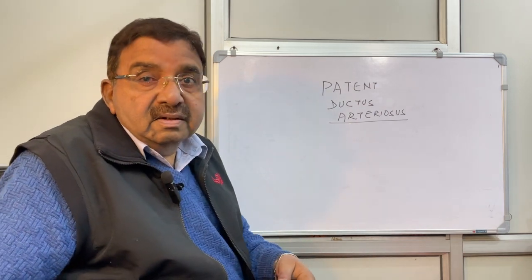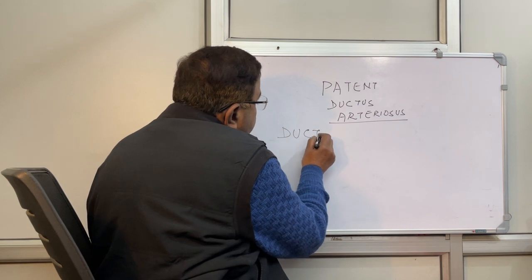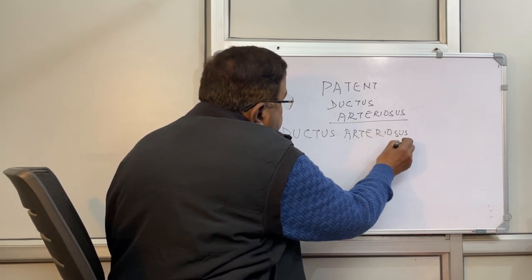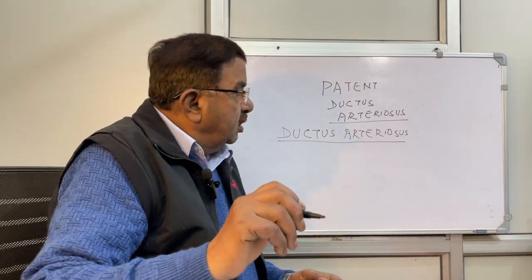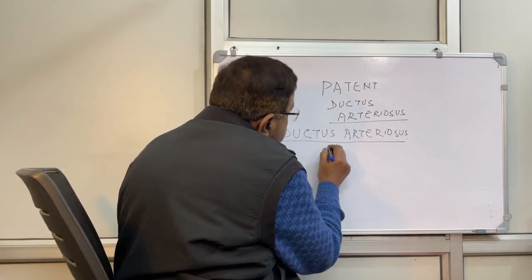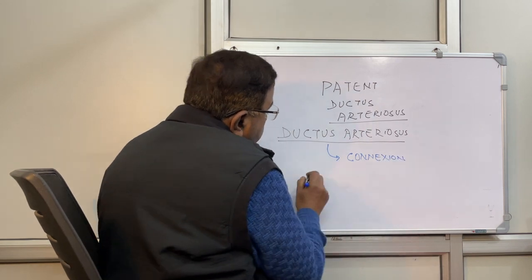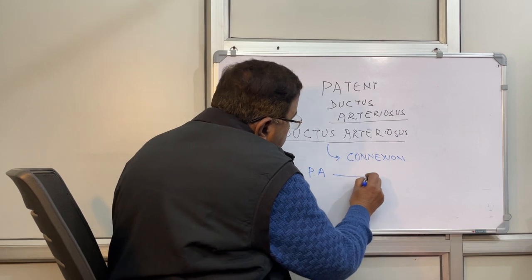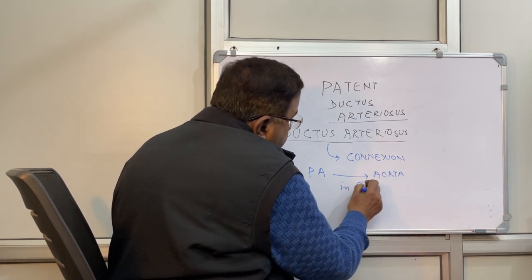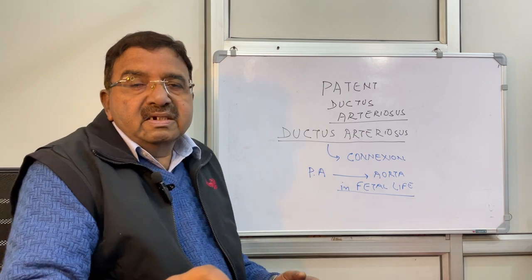What is ductus arteriosus? First of all, we must understand what is the structure that is known as ductus arteriosus. It is a connection between the pulmonary artery and aorta in fetal life. This is normally present in fetal life.